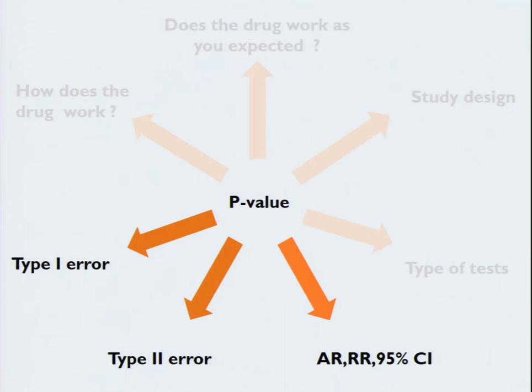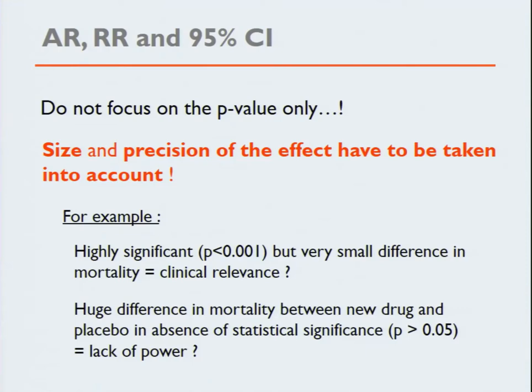Then we go to absolute risk and relative risks. Don't focus on the p-value only — the size and precision of the effect have to be taken into account. For example, suppose you have a very highly significant but very small difference in mortality: what is the clinical relevance? You put two times 30,000 patients in a trial with vitamin C and see that blood pressure decreases by one millimeter of mercury — it has no clinical relevance at all. But huge differences in mortality between a new drug and placebo in the absence of statistical significance may indicate a lack of power. So you have to look not only at the p-value but also at the size and precision, which is the 95% confidence interval.